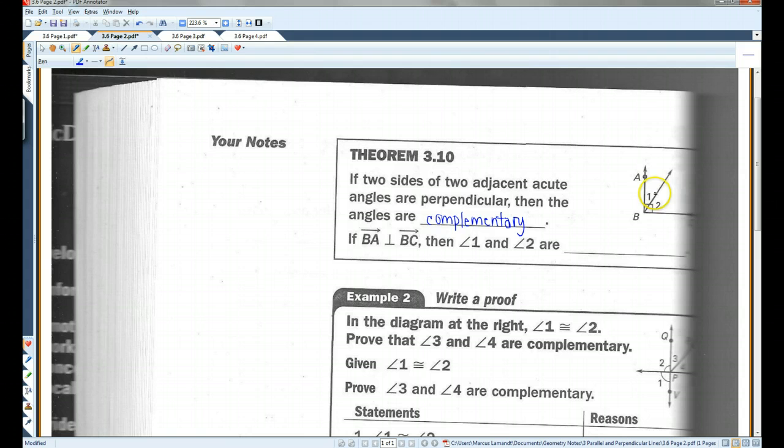So, of course, these two angles have to add up to 90 degrees because they are the two angles that make up the 90-degree angle. So, if ray BA is perpendicular to ray BC, then angle 1 and angle 2 are complementary.